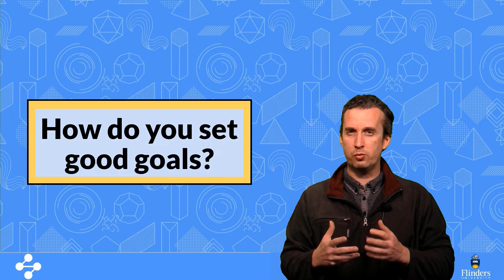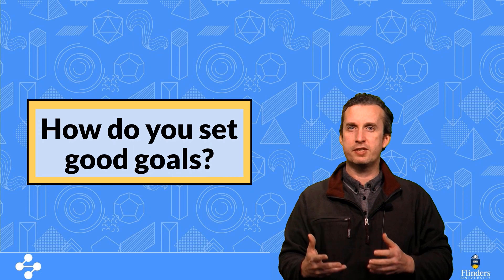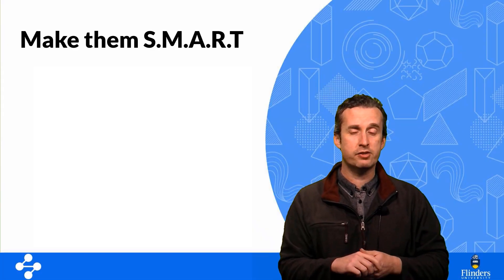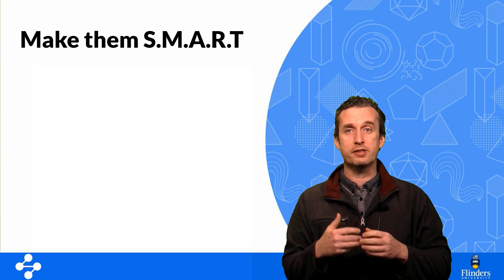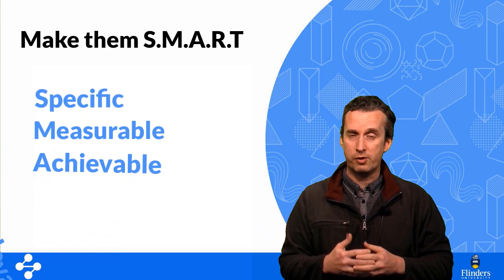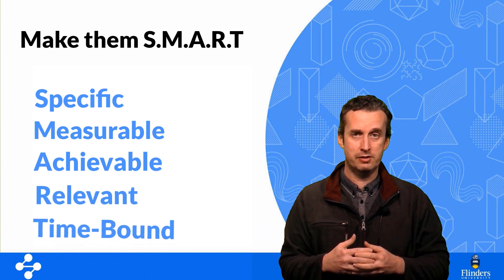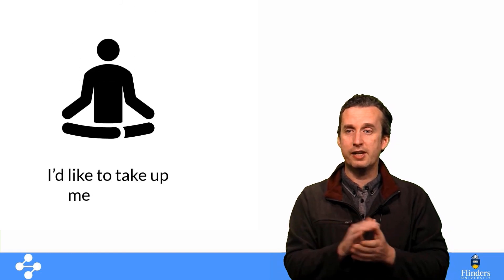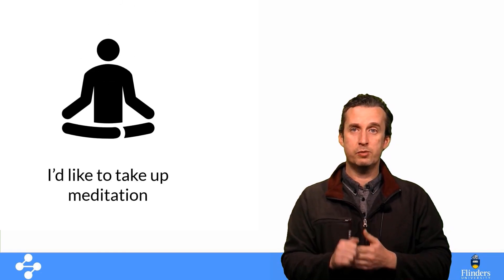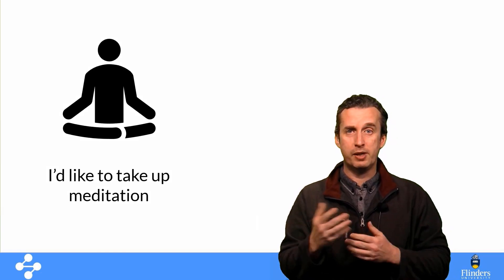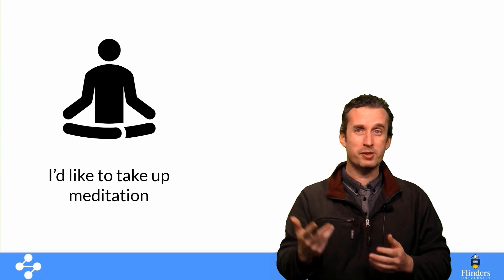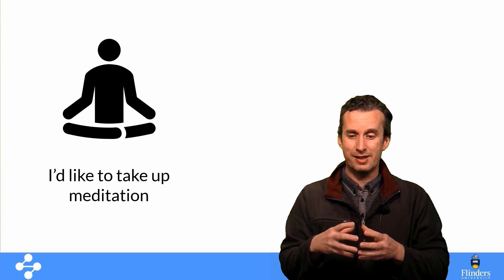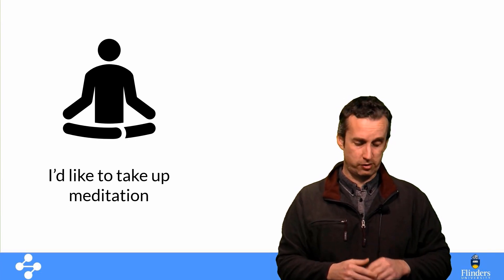So how do you set good goals? The first thing is to make your goals SMART — you might have heard this acronym before. It refers to a goal being specific, measurable, achievable, relevant, and time-bound. Rather than explain each individually, I'll give you an example. Say you decide you'd like to take up meditation, which I think would be a very good decision. While that's a noble goal, it's not a particularly well-articulated goal at this point, but we can make it better by applying the SMART criteria.